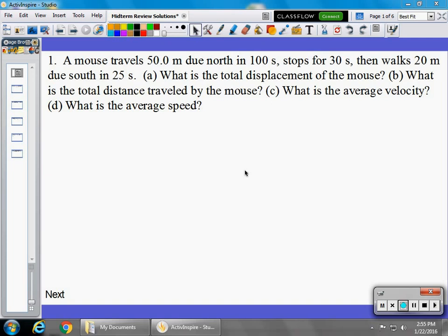I'm just going to read through it. A mouse travels 50 meters due north in 100 seconds, stops for 30 seconds, then walks 20 meters due south in 25 seconds. You're asked to calculate the total displacement, the distance, the average velocity, and average speed.